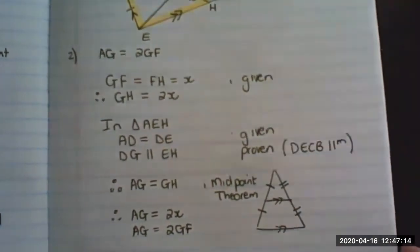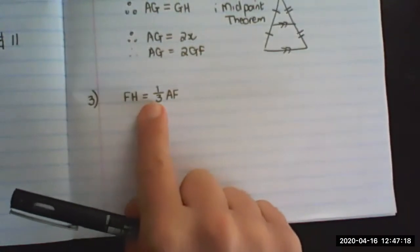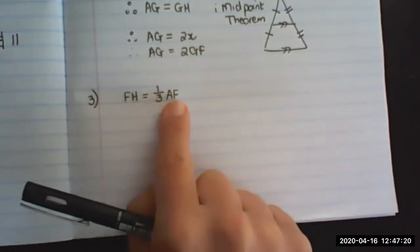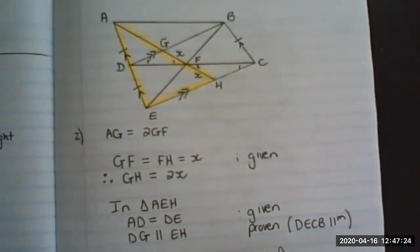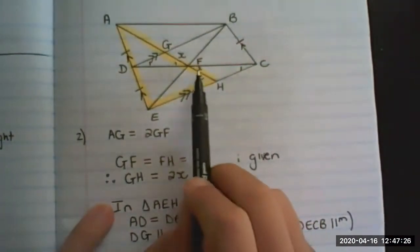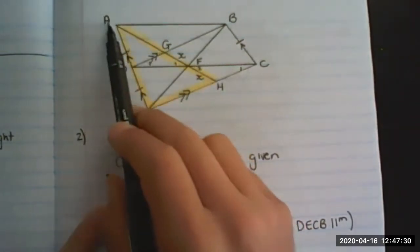The last question is prove that FH is equal to a third of AF. Now let's look at where it is. This is FH and we want to prove that it's a third of AF.